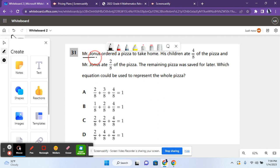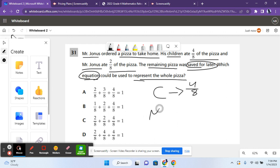So for 31 it says Mr. Jonas ordered a pizza to take home. His children ate four eighths of the pizza and Mr. Jonas ate two eighths of the pizza. The remaining pizza was saved for later. Which equation could be used to represent the whole pizza? So basically the children ate four eighths of the pizza and Mr. Jonas ate two eighths of the pizza and the rest was saved for later. So four eighths plus two eighths, that's six eighths, so six eighths was eaten and there's two eighths left to represent the whole pizza. So let's see which equation shows this properly.